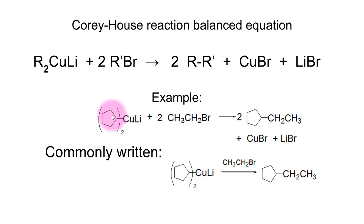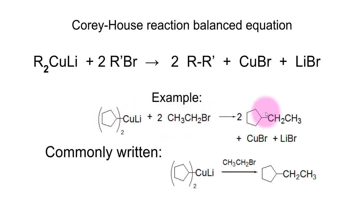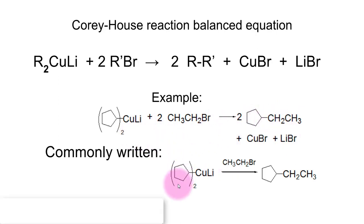Here's an example: if we start with dicyclopentyl copper lithium as the Gilman reagent and ethyl bromide as the alkyl halide, the cyclopentyl and the ethyl will link together and make cyclopentylethane, or ethylcyclopentane. Commonly, you just write the Gilman reagent, the alkyl halide, and show the alkane product.